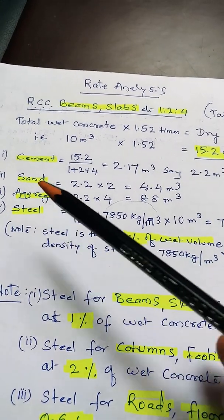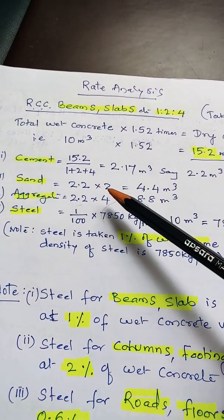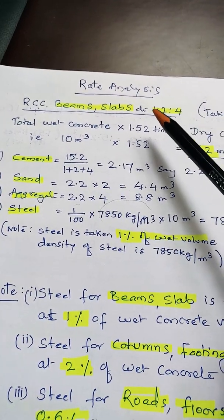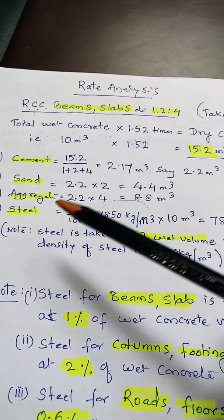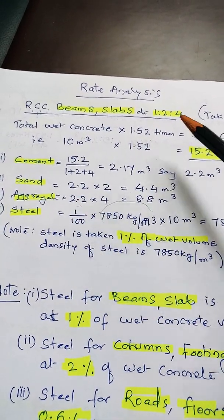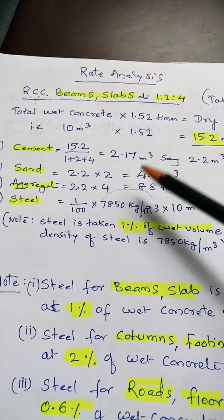Sand will be 2.2 multiplied by 2 times because if one is cement, two is sand. So 2.2 × 2 = 4.4 m³. Similarly, aggregate is 2.2 × 4 = 8.8 m³.